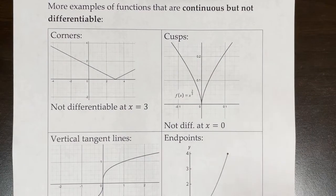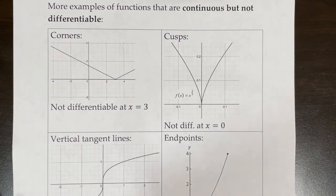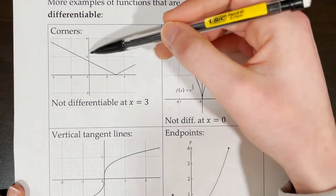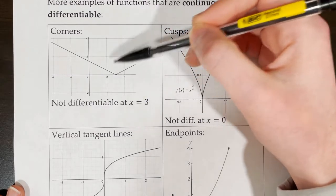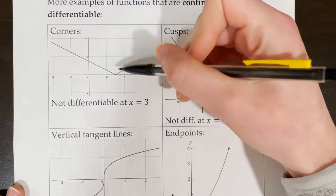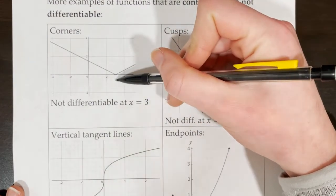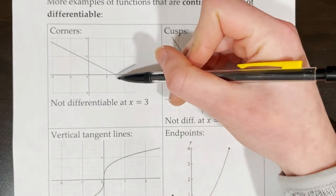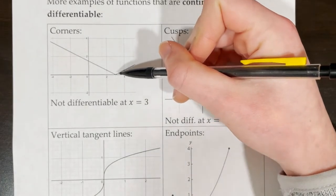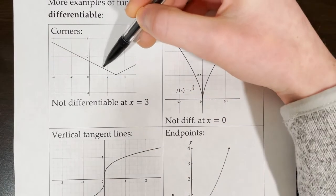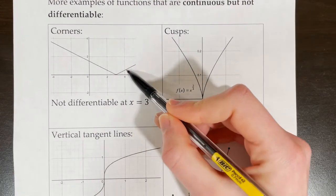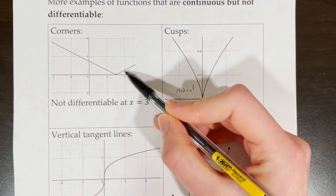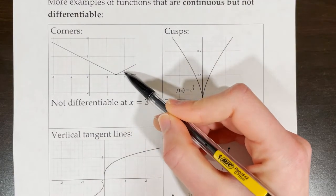Here are more examples of functions that are continuous but not differentiable. One situation is when we have what we call a corner, and this is when you have an absolute value function. We have a corner at x equals 3. Even though the function is continuous at x equals 3, the slope of the tangent line on the left is not the same as the slope of the tangent line on the right, so the function is not differentiable at x equals 3.